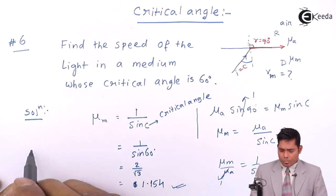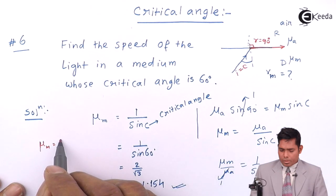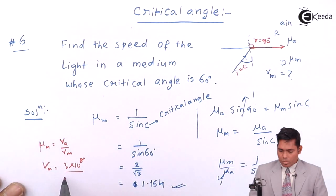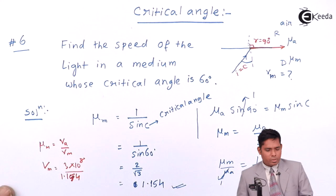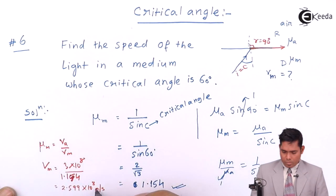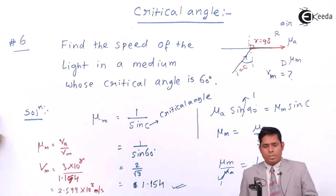To find the speed, you know that after you get mu m, speed in air by speed in medium. The medium is 3×10^8 divided by this value, 2 by root 3, which is 1.154. So this is the answer to this question.